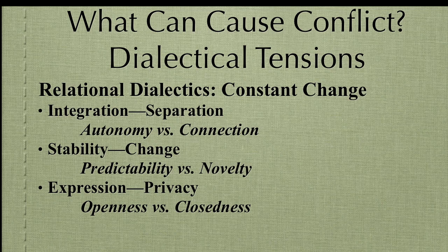The second dialectic is stability and change. After time, novelty may wear off and one partner may try to change the other. When relational partners make plans to be together, those plans reinforce the relationship and begin to establish a routine. Stability and change can be thought of as predictability versus novelty — the idea of wanting some mystery, but also wanting some predictability and stability.